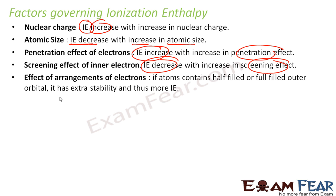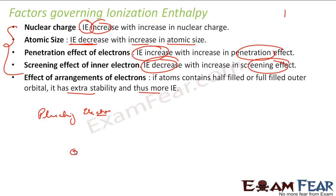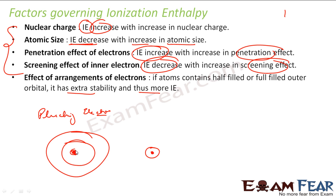Also, the arrangement — for example, half-filled and fully-filled orbitals are extra stable. That is why for noble gases, the ionization enthalpy is very high because they are stable and do not want to lose electrons. It is all about how easily you can pluck electrons from the atom. For an atom with two shells, the outer electron experiences less effective nuclear charge because inner shells screen the charge, so you can easily pluck that electron.